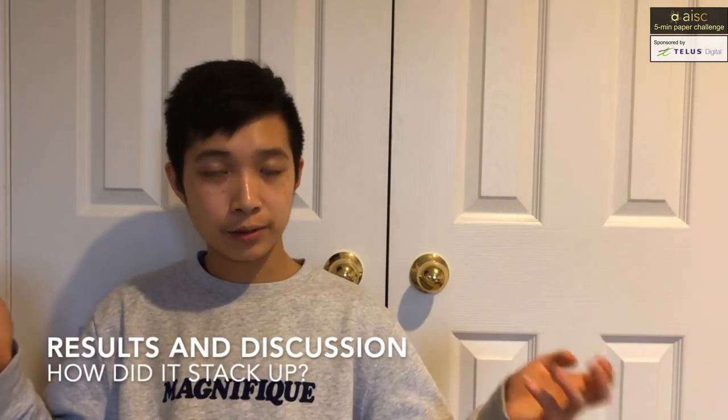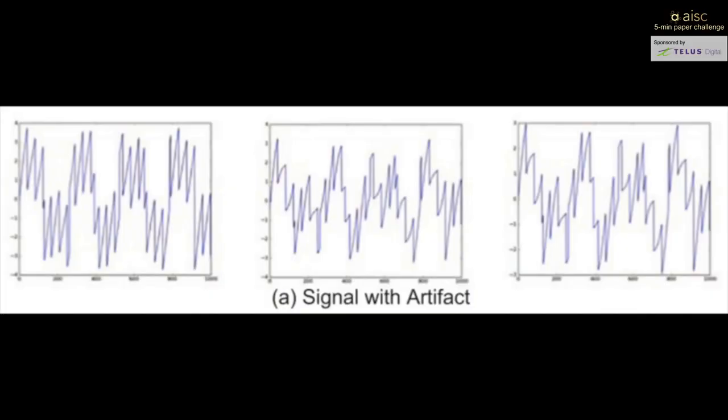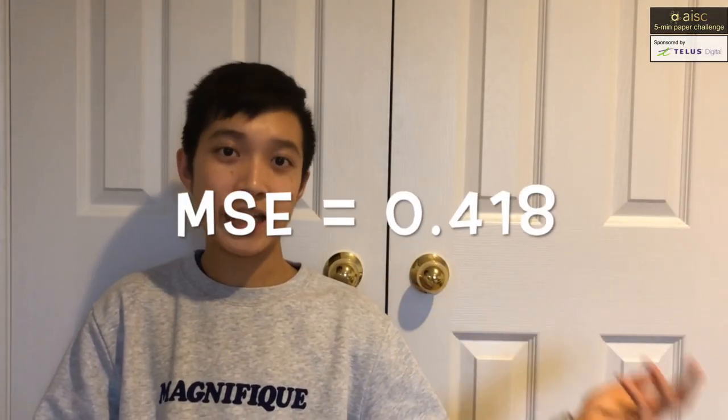To determine whether the network was successful, the researchers used two methods: one was to create a synthetic dataset, and the other was to use actual EEG-recorded brainwaves. For the synthetic dataset, the researchers added together sine and square waves each with random periods. To generate the noisy dataset, they took the clean synthetic brainwaves and added sawtooth waves. They trained the network on this data and were able to achieve a mean squared error of 0.418.